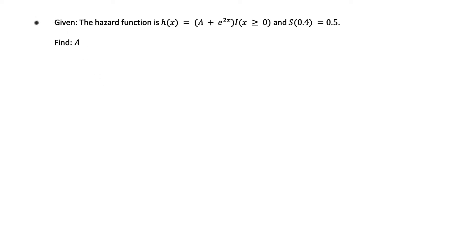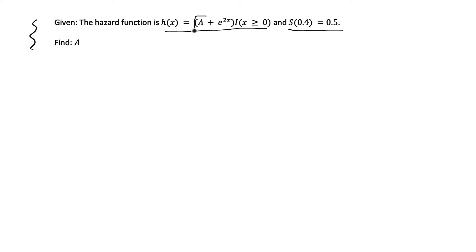Hey everyone. In this video I'm going to do this example survival analysis problem. We are given a hazard function h(x) with a certain equation, and also given a value for a survival function: S(0.4) = 0.5. There's an unknown variable a in the hazard function, and given these two pieces of information we're asked to find and solve for the value of a.